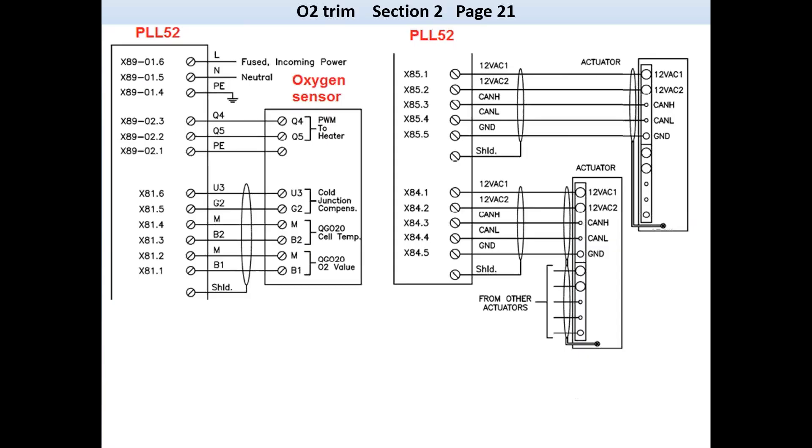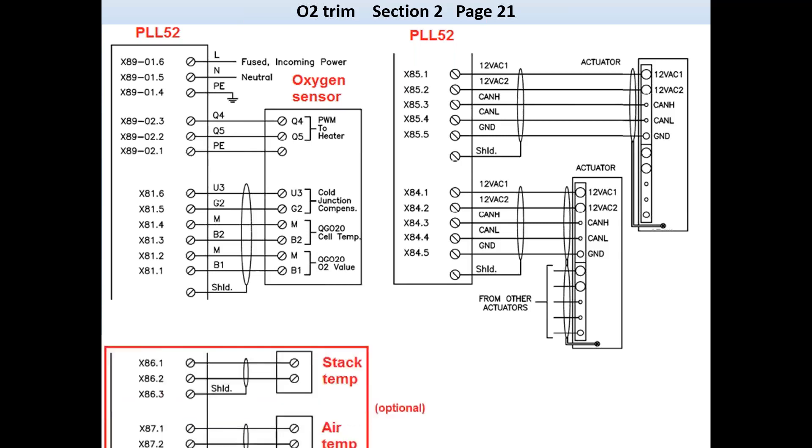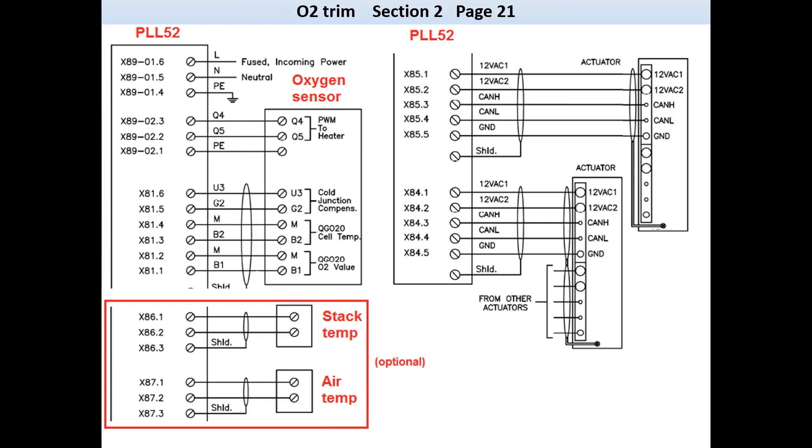The following slide covers the O2 trim connections. When doing O2 trim, a PLL CAN bus module is required, and obviously the oxygen sensor called the QGO. Not required, but usually supplied, are the ambient temperature sensor and the stack or exhaust flue gas temperature sensor. These two sensors allow the LMV-5, along with O2 level reading, to calculate and display burner efficiency. O2 trim is an investment, and the small adder for two RTDs is well worth the benefit of viewing the actual efficiency.